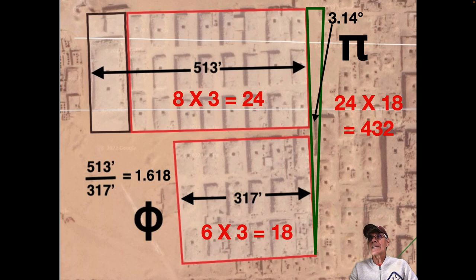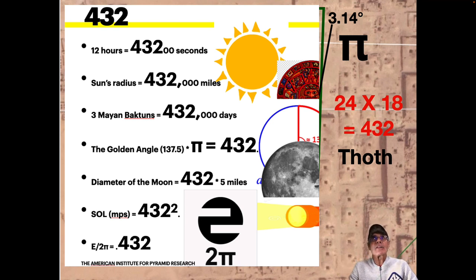24 times 18 is 432. 432, the Toth constant, as Robert Grant calls it. You've got all these 432s, the hours in a day, the sun's radius, the golden angle. 432 is everywhere.